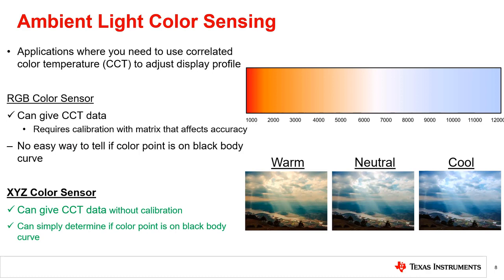XYZ color sensors can easily and accurately be mapped to the nearest CCT value without calibration. To determine if the color point should be mapped to the CCT, it is common practice to convert the XYZ coordinates to the UV color space. With a simple equation, you can determine the distance of the color point from the ideal black body curve, and invalid values can be ruled out. Nonetheless, if a cover material is used that shifts the color point, both RGB and XYZ color sensors will require calibration.